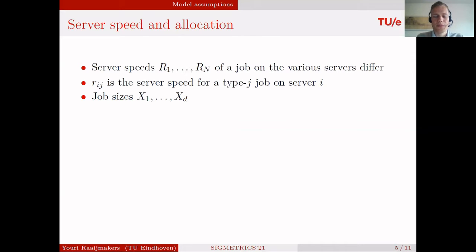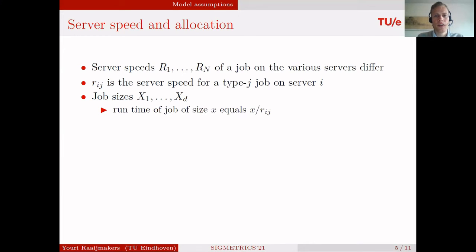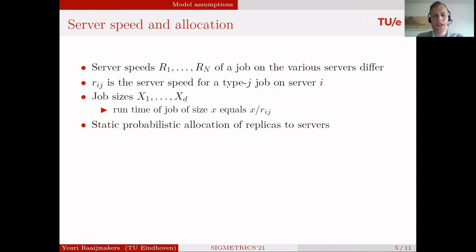To set the model more clearly, we assume server speeds R divided by capital R, which are different for every server and assumed to be discrete. So R_ij is the server speed for type-j job on server i. The job sizes, denoted by capital X, can be different for every replica. The runtime of a job is then X over the server speed. We allow for static probabilistic allocation of replicas to servers, which may depend on the job type.